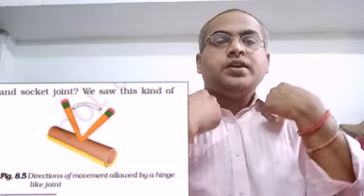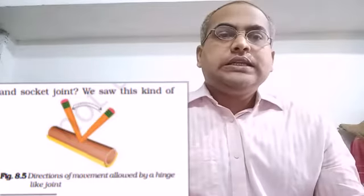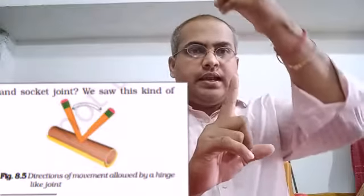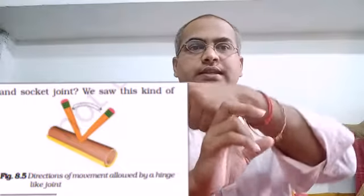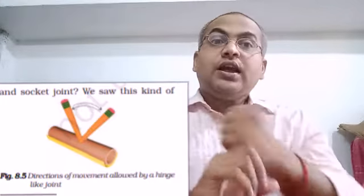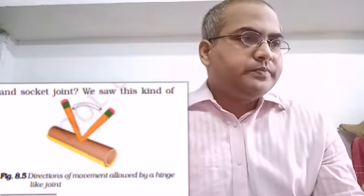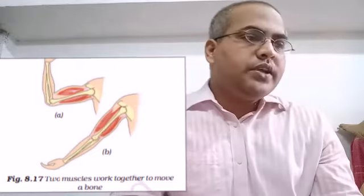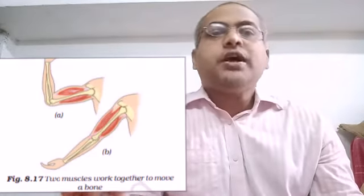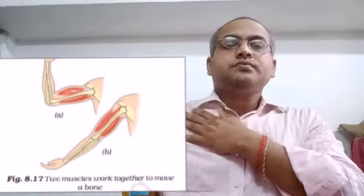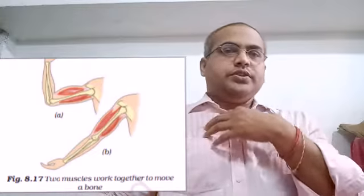First, let's discuss the pivot joint. In our vertebral column, a bone stands upright and our skull is fixed on it. The skull can twist and rotate, allowing a good range of movement. This twisting movement is what makes it a pivot joint.